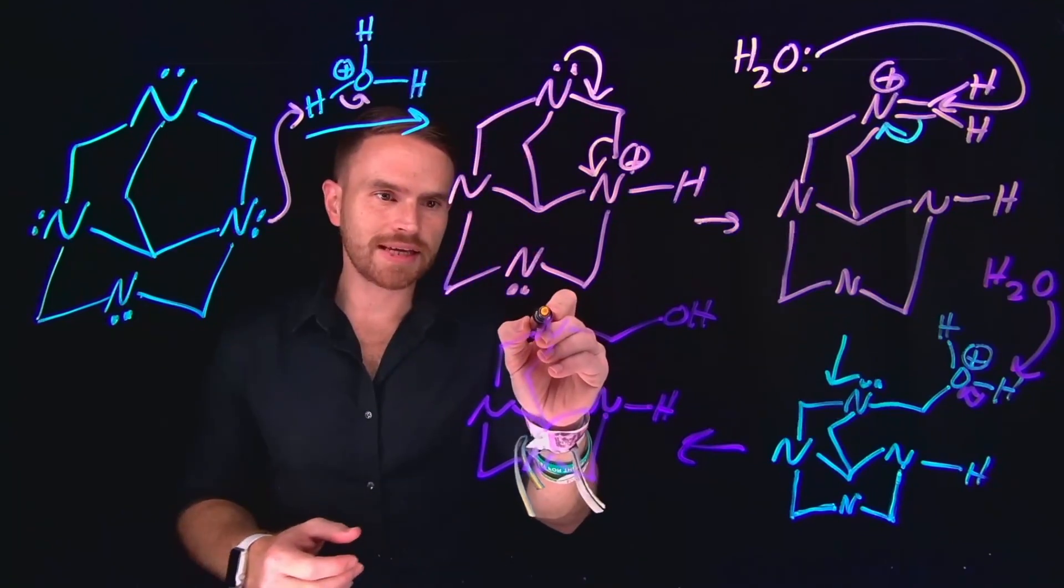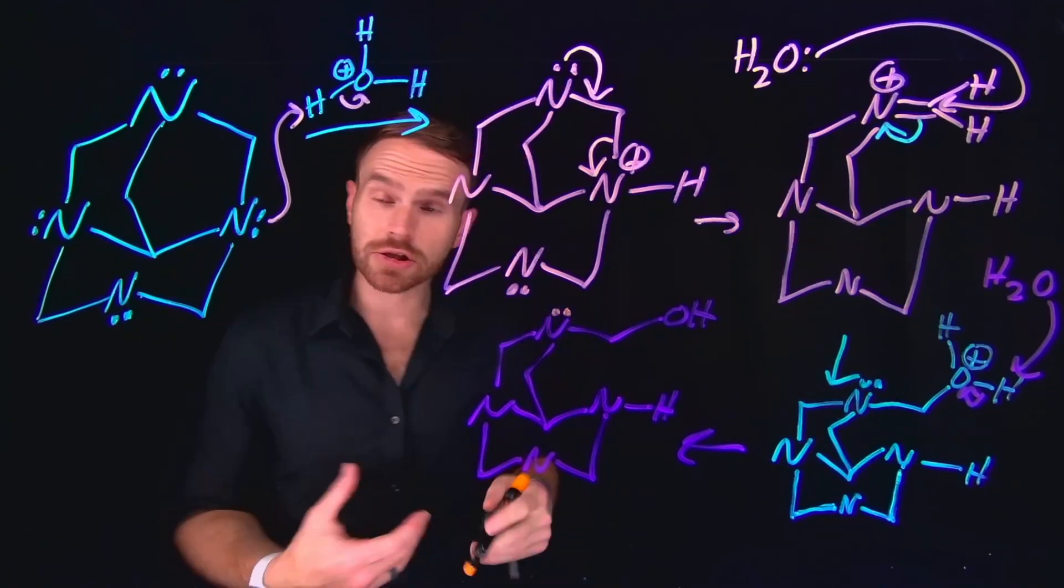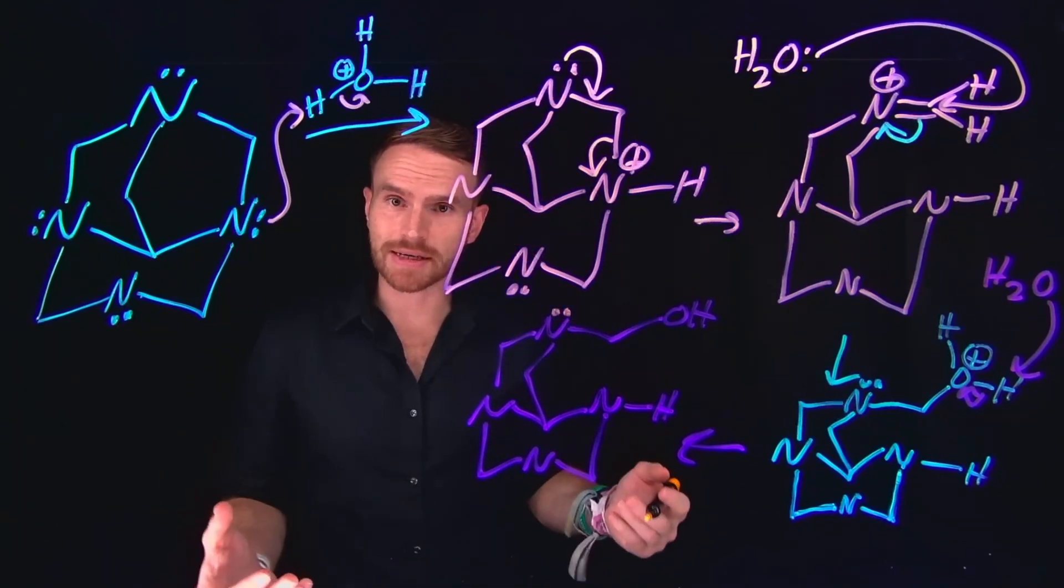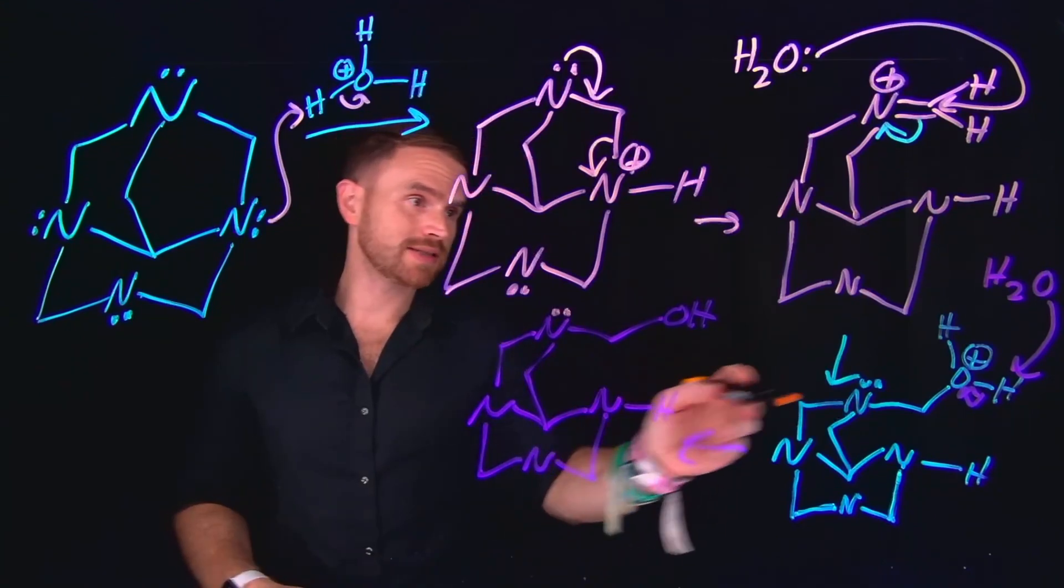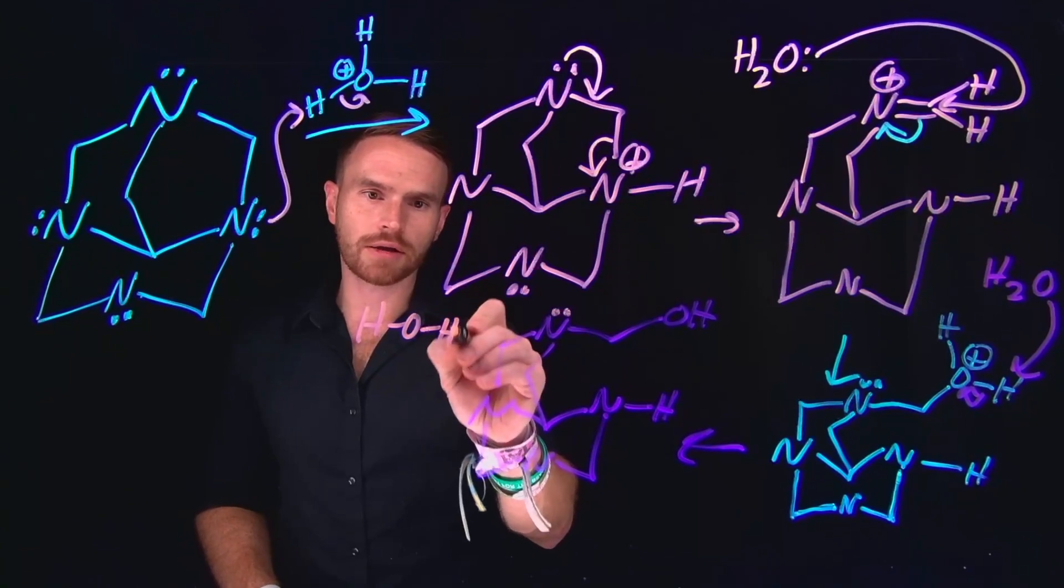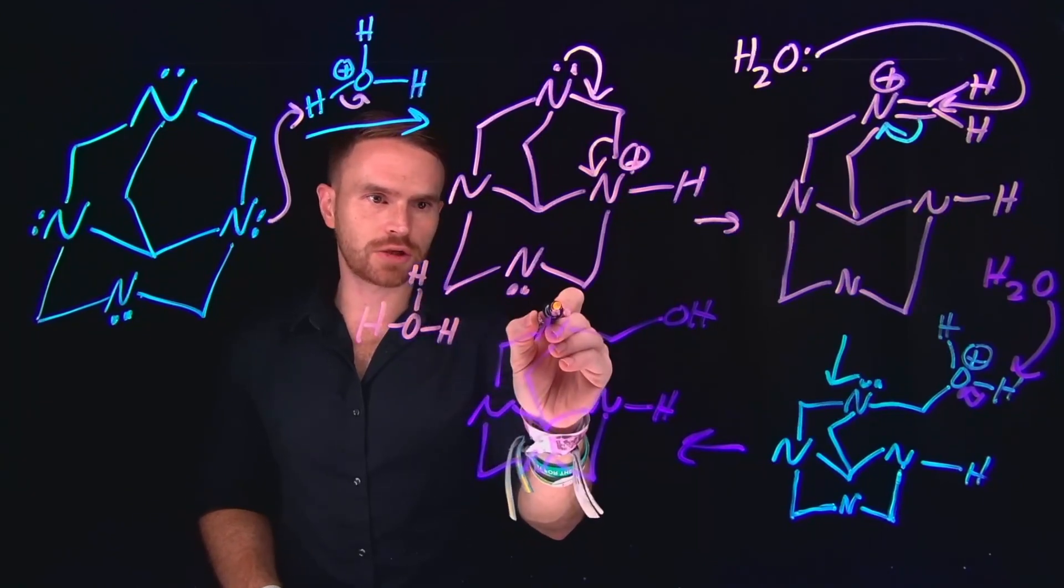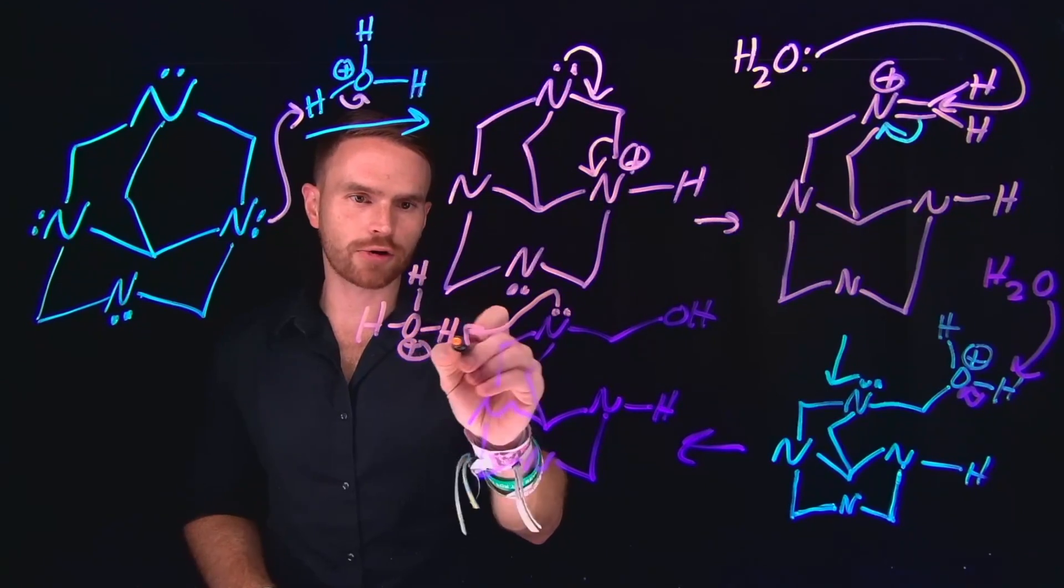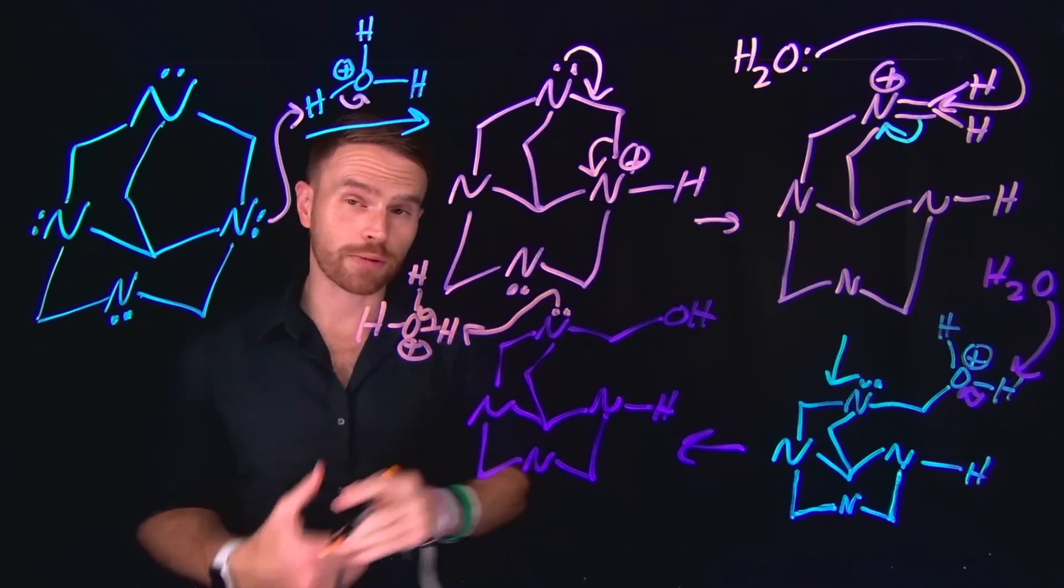Now, importantly, remember that each of these nitrogens are actually alkalamines, which are pretty basic. And in fact, they're nucleophilic, which means that when we generated OH3 plus here, what we've done is we've created a site where this nucleophilic nitrogen will come and deprotonate our newly formed acid to make another water molecule.